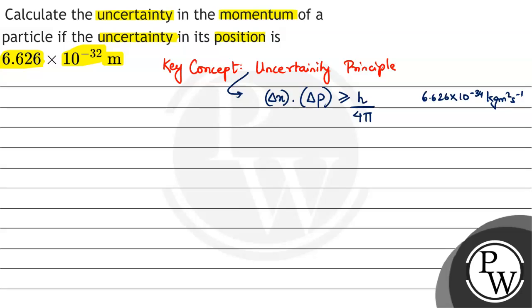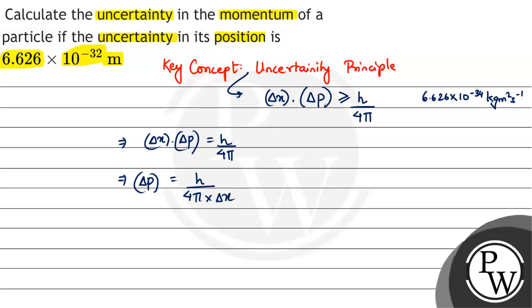We will use the uncertainty in position and the uncertainty in momentum. So we write delta x into delta p is equal to h by 4 pi, and therefore delta p equals h divided by 4 pi into delta x.